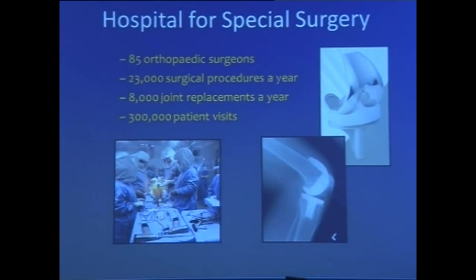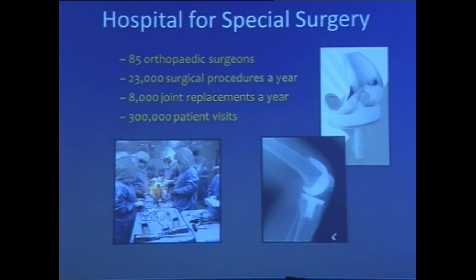Coming to Hospital for Special Surgery, we at the moment have 85 orthopedic surgeons. We do about 25,000 surgical procedures a year, 8,000 joint replacements a year — primarily hips and knees, but also ankle, elbow, and shoulder — and about 300,000 patient visits.